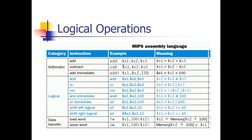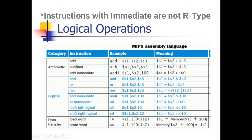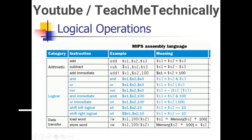Now I am going to explain which instructions fall under R-type instructions. Basically all arithmetic and logical operations fall in R-type instructions — operations like add, subtract, add immediate, AND, OR, NOR, add immediate, OR immediate, shift left logical, and shift right logical all fall into R-type instructions.